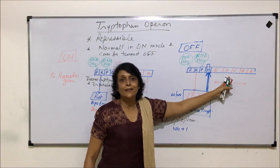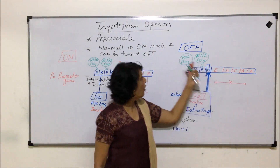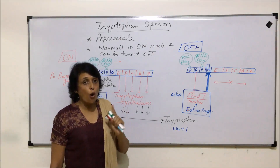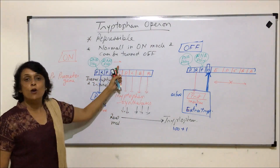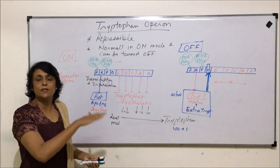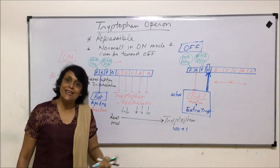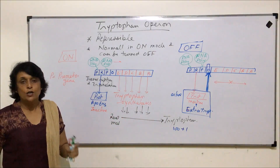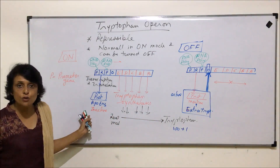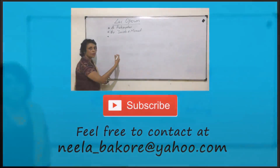As soon as that extra tryptophan attaches with the protein, the complex becomes active and binds with the operator gene, stopping the transcription and translation, thus stopping the synthesis. The operon has been turned off, and that is why we call this a repressible or suppressible operon — we can suppress this operon. The condition is: if the end product exceeds the required concentration. So we have now discussed both the lac operon, which is inducible, and the tryptophan operon, which is repressible.